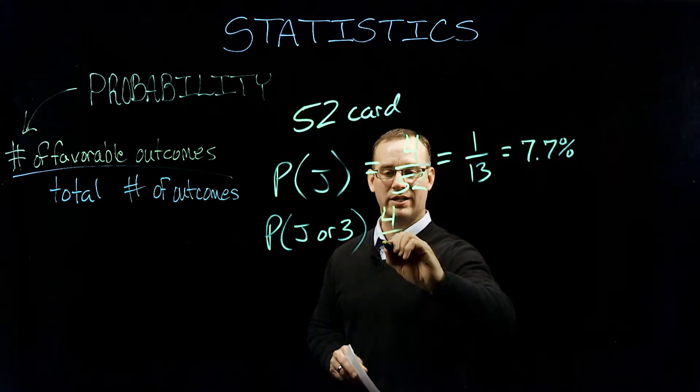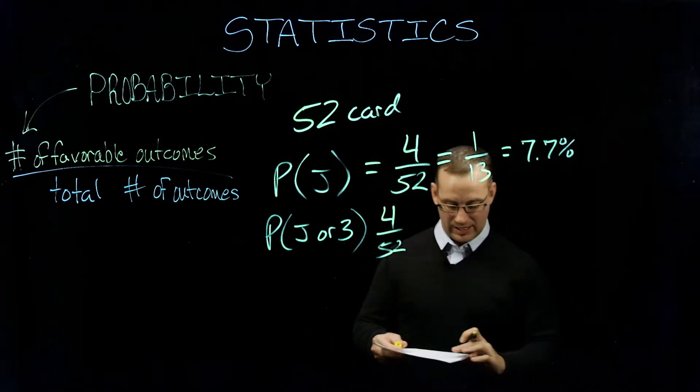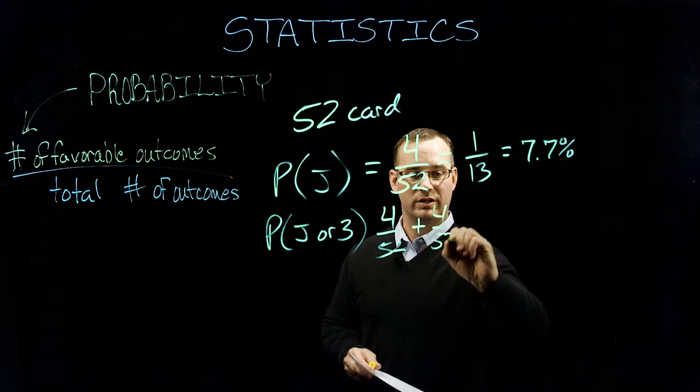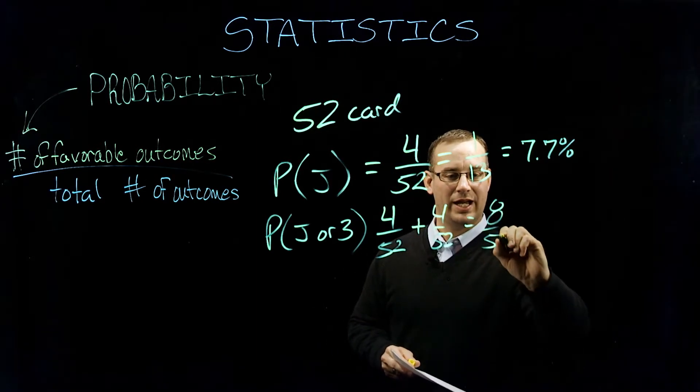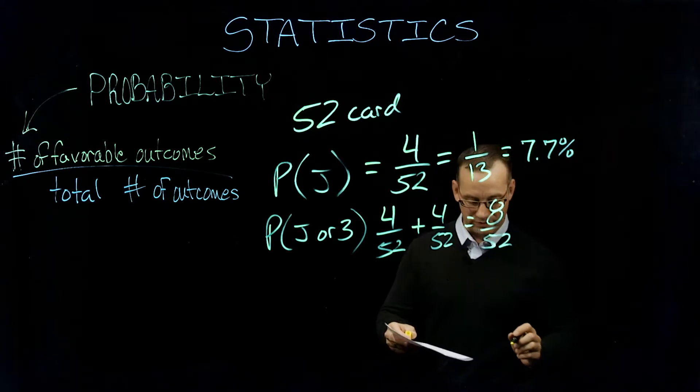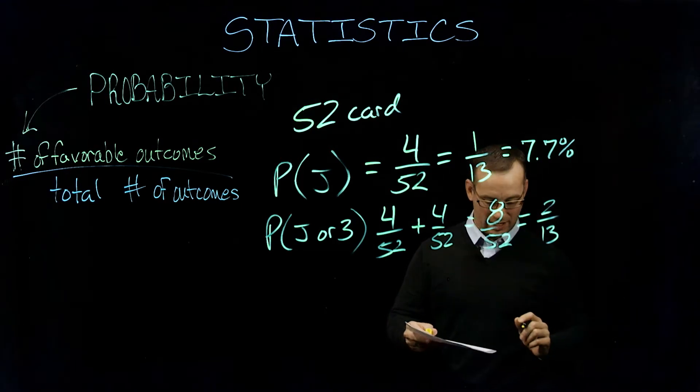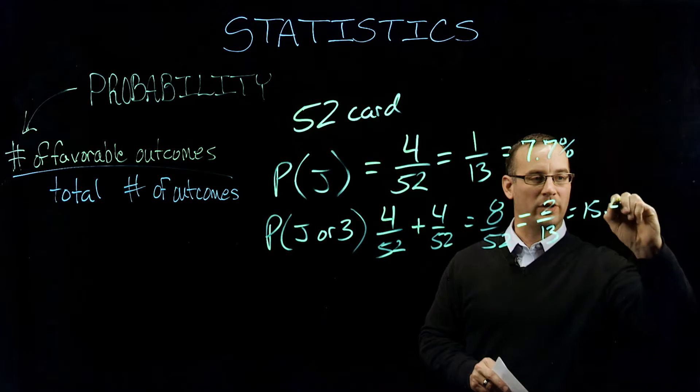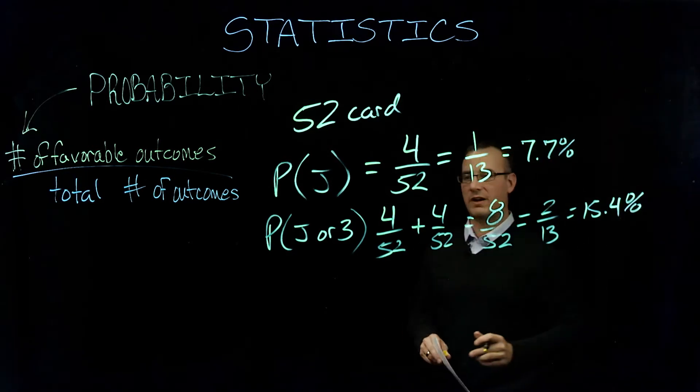So in essence, we're going to look at we've got four out of 52, and then we've also got four out of 52. So that's going to equal eight out of 52, which is going to reduce down to two out of 13, or 15.4 percent of the time. Fair enough.